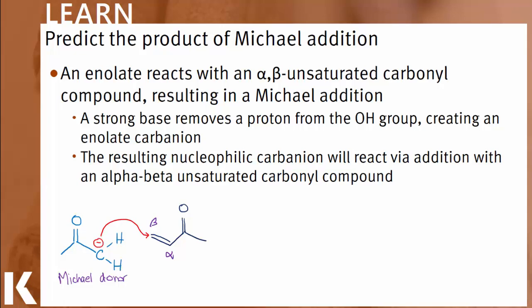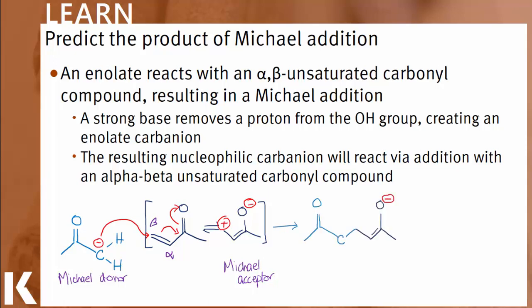Why? Let's use every organic chemist's favorite answer: resonance. We have a conjugated system here, and alternating pi electrons allow for the formation of a positive charge on the beta carbon, which is why this carbon — the beta carbon — is called the electrophile. The electrophile in the second molecule is called the Michael acceptor. The result is a nucleophilic addition of the Michael donor and acceptor together, and a final acid workup step results in the formation of the second carbonyl.